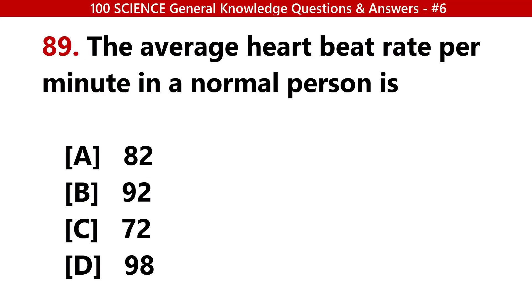The average heartbeat rate per minute in a normal person is? Answer C: 72.